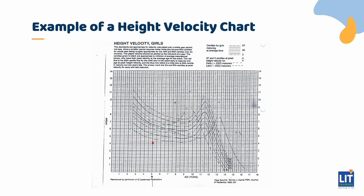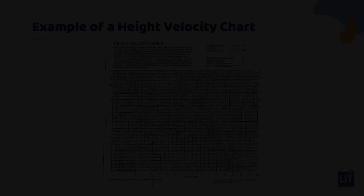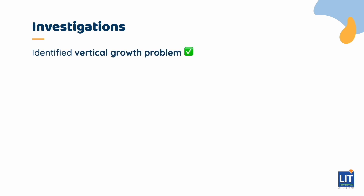This next chart shows height velocity over time, and that can be compared with the norms provided. In this chart, the patient's growth velocity at age 5 years was less than the 3rd percentile for her age, which is abnormally slow and needs to be addressed. Once you have determined that she is underperforming her expected target centile range and her height velocity is less than the 3rd percentile for age, you have clearly identified that she does indeed have a problem with vertical growth.